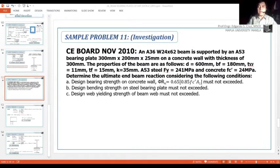The F-Y of the steel beam is different from the F-Y of the beam bearing plate. The dimension of the bearing plate were given but it was not specified which of those dimensions is the length, the width, and most likely the thickness is the 25mm. The concrete wall thickness is 300mm. The properties of the beam were given - the depth, the BF, the thickness of the web. The F-Y values of the A53 steel is 241 MPa and the concrete fc' is 24 MPa.